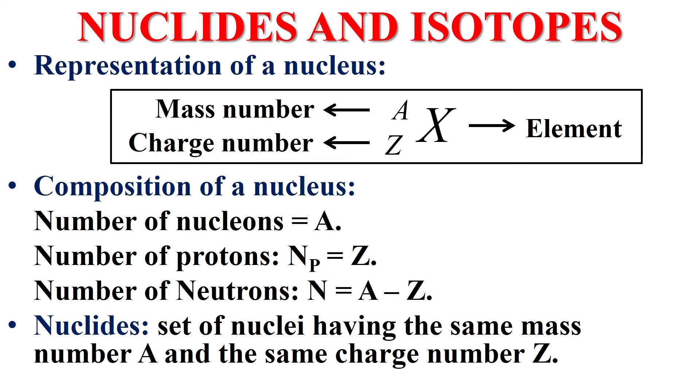Now, composition of a nucleus. The number above A is the number of nucleons total. We need to find the number of protons and the number of neutrons inside this nucleus.